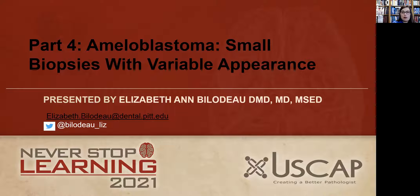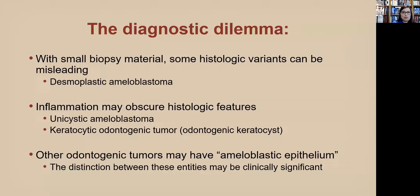We're going to talk about small biopsies that have a variable appearance as well as ameloblastoma. The diagnostic dilemma is that with small biopsy material, some of our histologic variants can be misleading. Also, inflammation has a tendency to obscure histologic features, particularly in some of our tumor types. And lastly, there are multiple tumors that can have an ameloblastic type epithelium, and this can be a diagnostic pitfall.